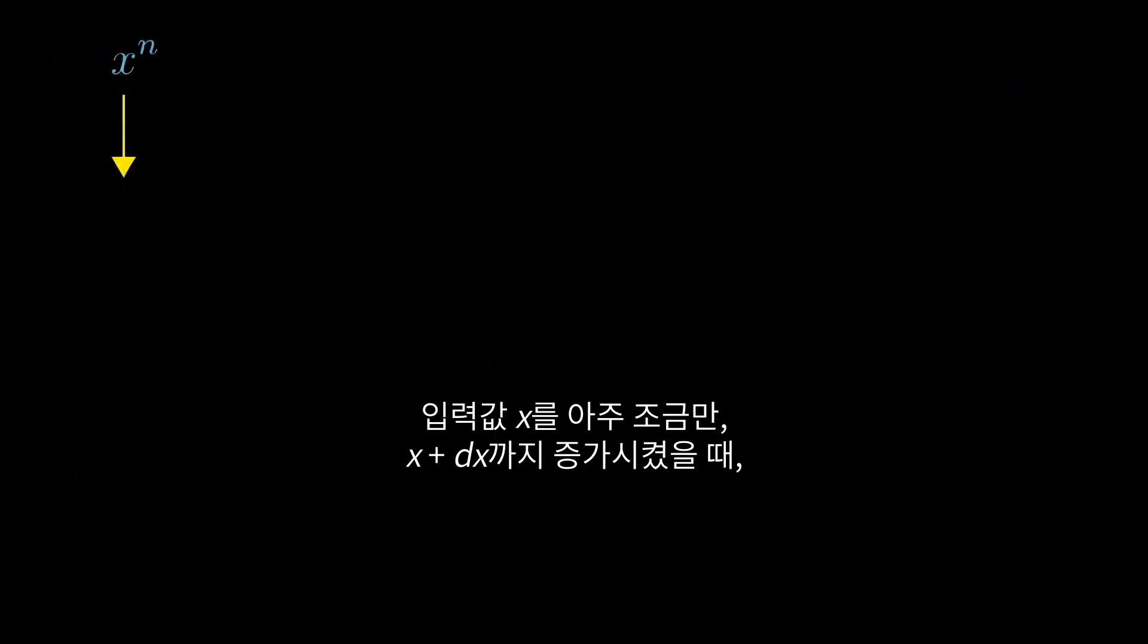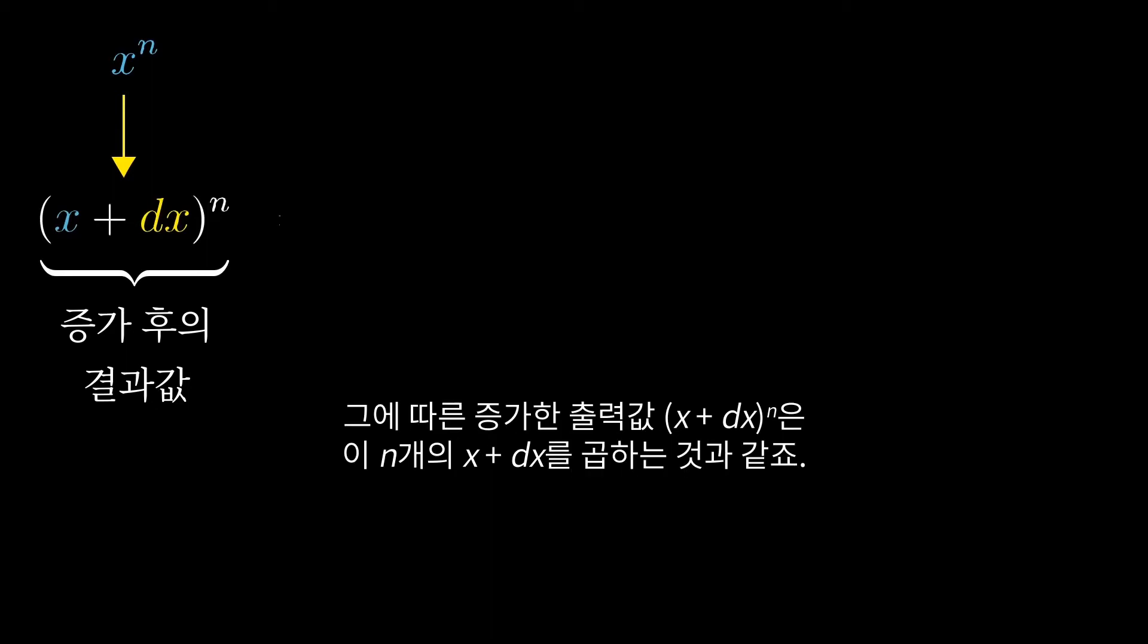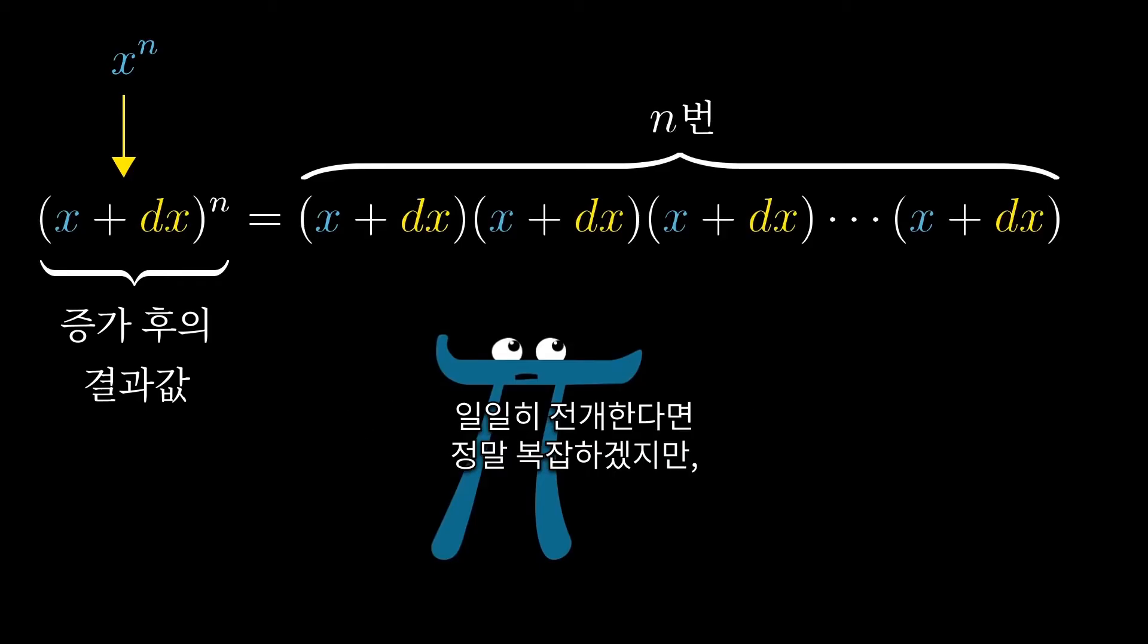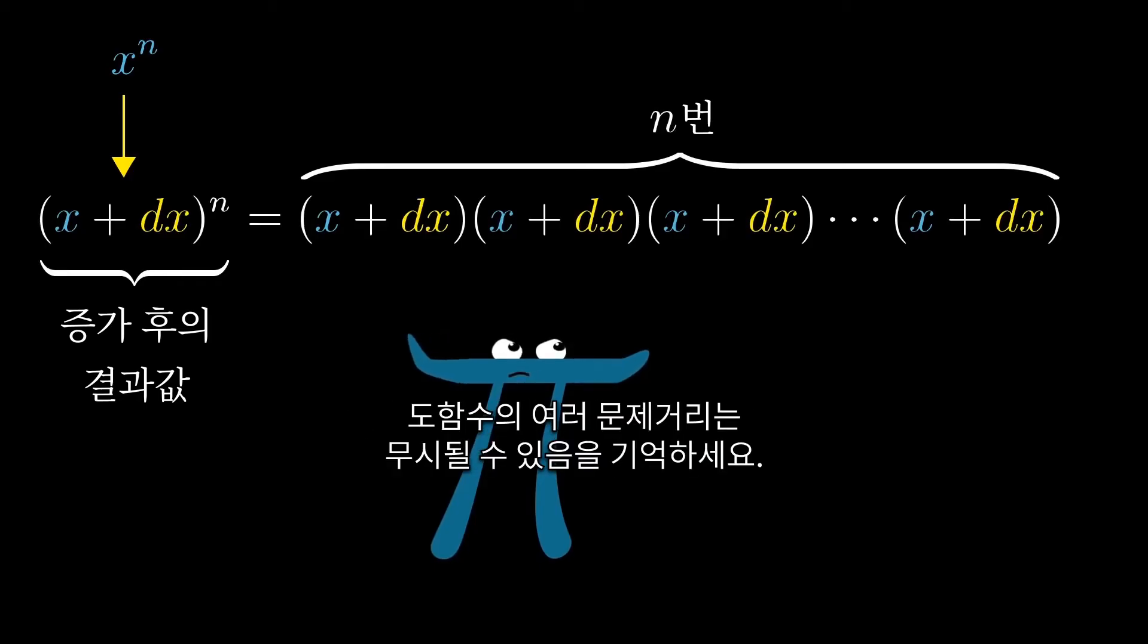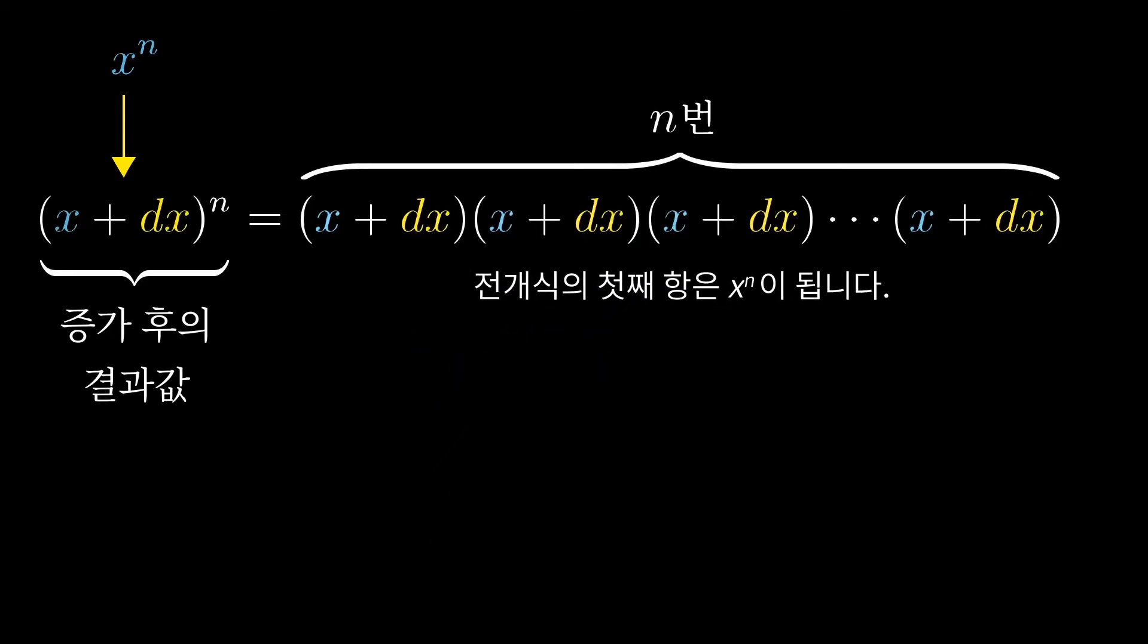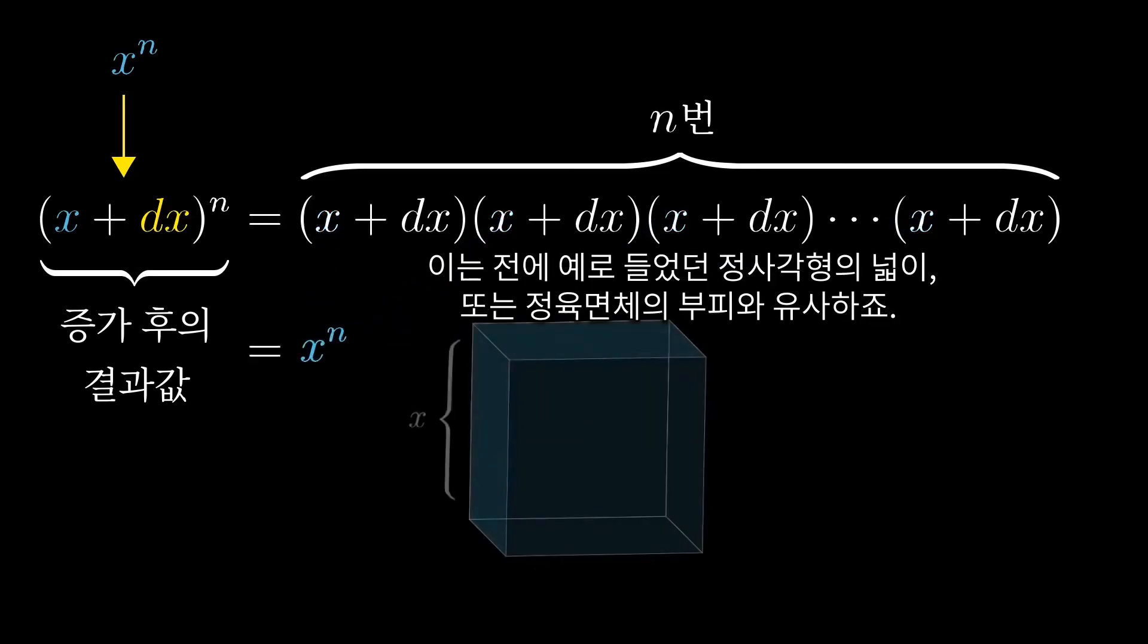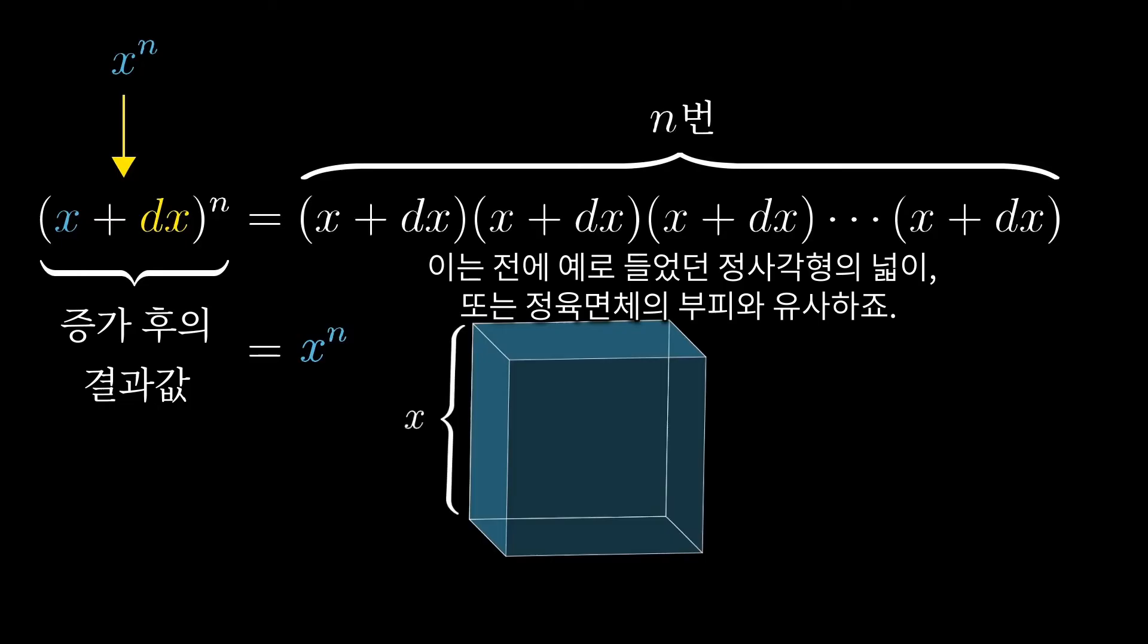But rather than chucking it all off to symbolic patterns, let's just take a moment and think about why this works for powers beyond just 2 and 3. When you nudge that input x, increasing it slightly to x plus dx, working out the exact value of that nudged output would involve multiplying together these n separate x plus dx terms. The full expansion would be really complicated, but part of the point of derivatives is that most of that complication can be ignored.